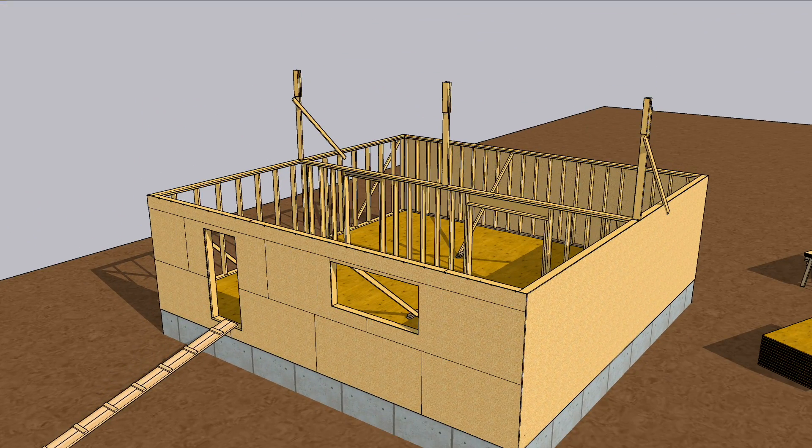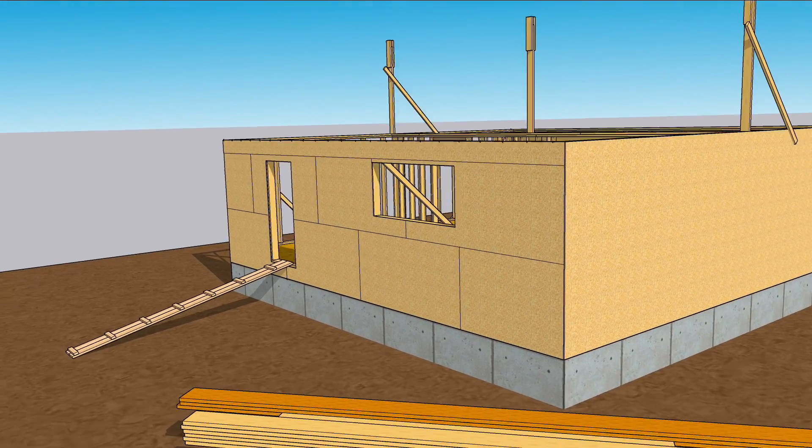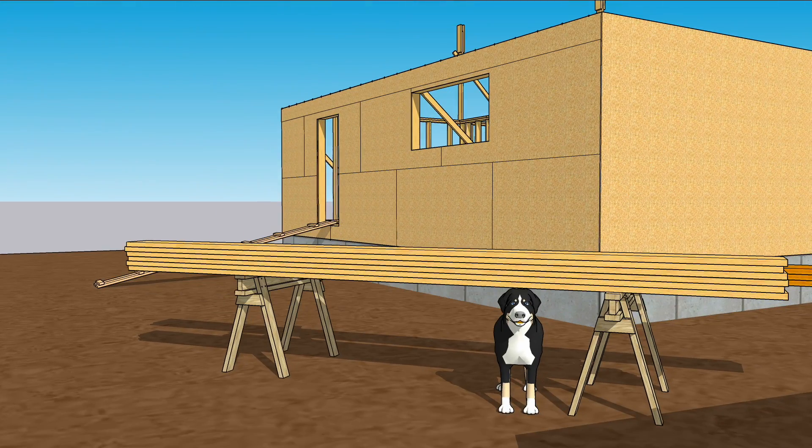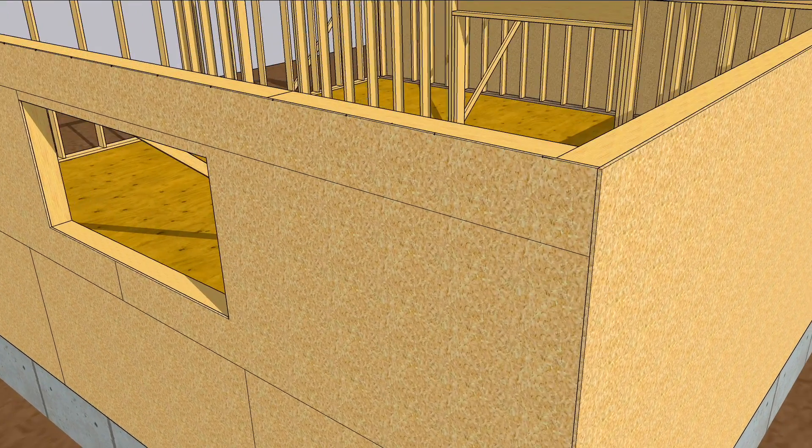But before you set the ridge, you'll want to lay it out to match the walls. It's easier to lay the ridge out while it's on sawhorses than when it's 15 feet in the air. But lay out the walls first.